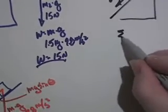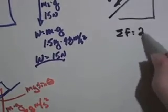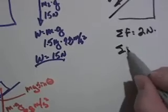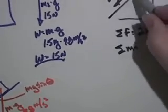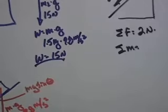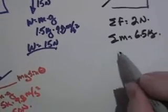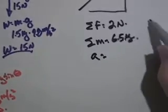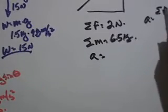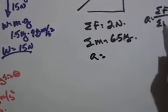Well, the sum of the forces is 2 newtons. The sum of the masses is 5 kilograms plus 1.5 kilograms. So it's 6.5 kilograms. So my acceleration of the system is going to be equal to the sum of the forces divided by the mass of the system.